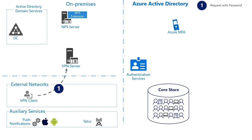The user opens their VPN client and is presented with a dialog box requesting them to enter their username and credential. Now that the user has provided their username and password to the VPN client, the VPN server presents that credential pair to the NPS server as a Radius request to authenticate the user, and it waits for a response to determine if the user is authenticated to access the service or not.